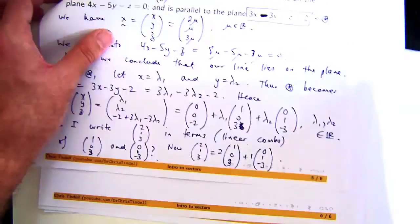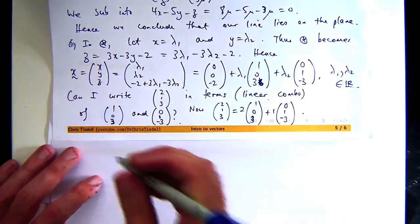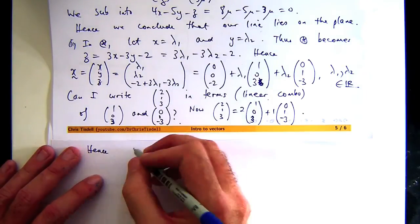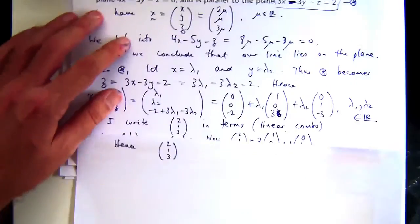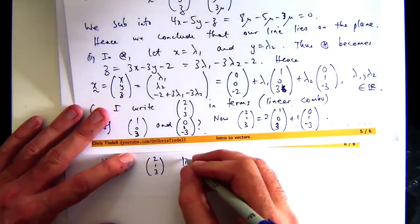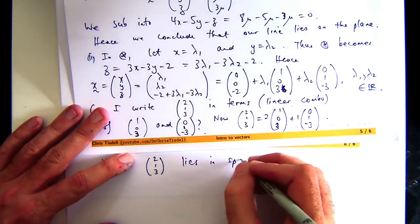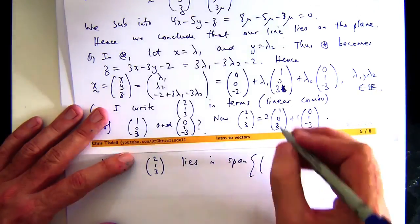Let me just write that out. So hence, (2, 1, 3), the vector that's parallel to this line, lies in the span of these two vectors.